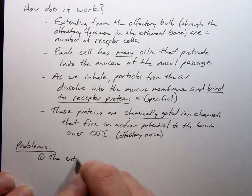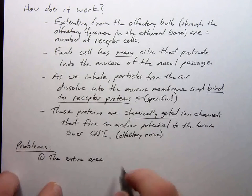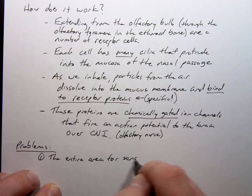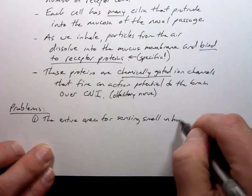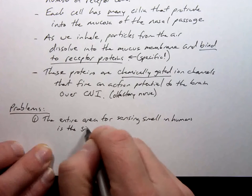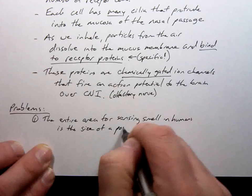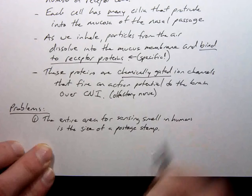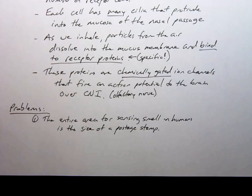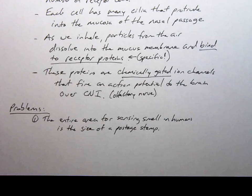Now there's some problems with this. Number one: The entire area for sensing smell in humans is the size of a postage stamp. And that's if it's unfolded. The entire place in our body where we sense smell is only about the size of a stamp.